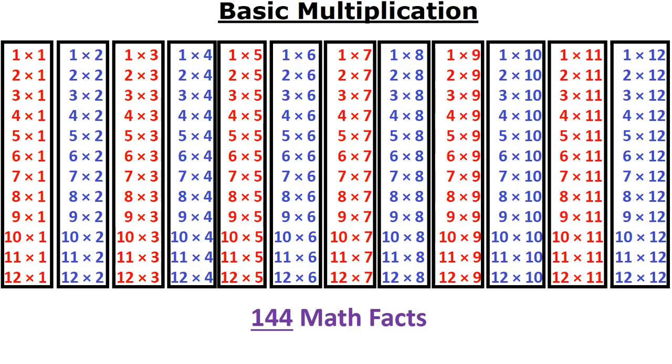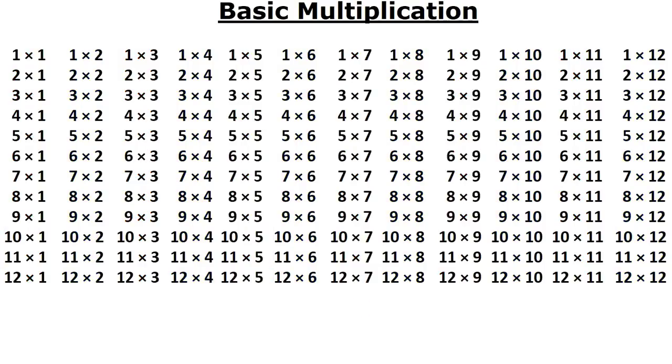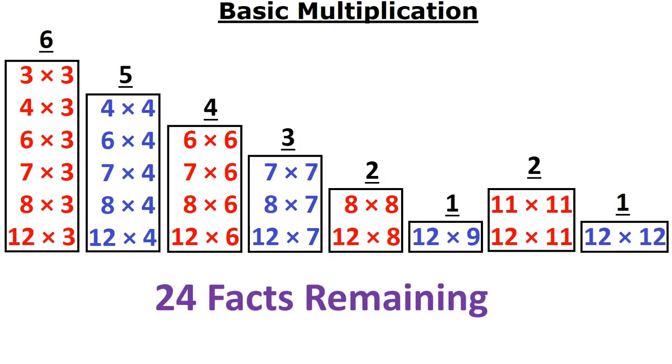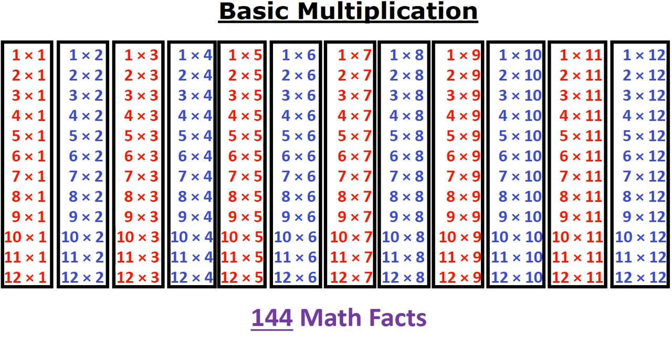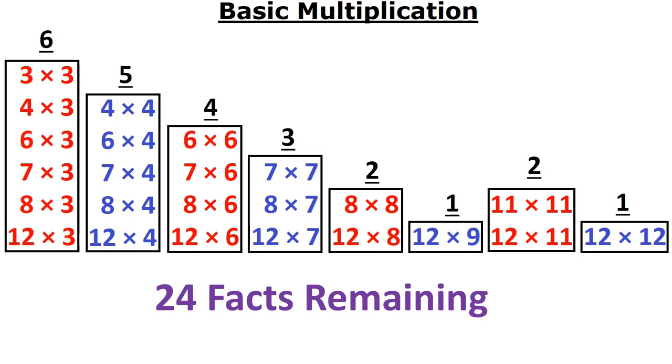However, we've created a method where if you just know 6 rules, just 6 rules, you can go from 144 down to only 24 remaining. That's right, from just 6 rules, we go from 144 Math Facts down to 24. How is that possible? Well, let's take a look.